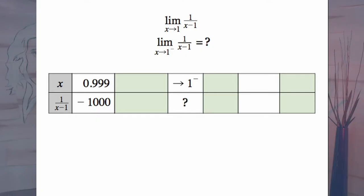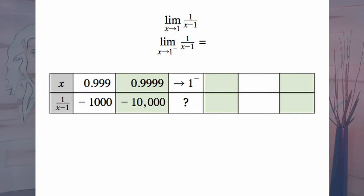Ask them: what's happening as x gets close to 1 from the left-hand side? You may even have to put on the board something like 1 over (0.999 minus 1). Walk them through it — we get 1 over negative 0.001, or 1 over negative 1/1,000. Going further, try 1 over (0.9999 minus 1), giving 1 over negative 1/10,000. The connection we want them to make is that 1 over a very small number — 1 over 1/1,000, 1 over 1/10,000 — is really getting larger in the grand scheme of things.